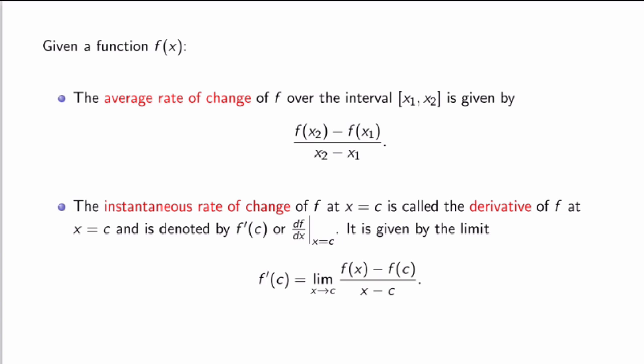So suppose that you're given a function f as a function of a variable x. Then you can define its average rate of change over a certain interval as being the difference in the function evaluated at the two endpoints, f(x₂) minus f(x₁), divided by x₂ minus x₁.